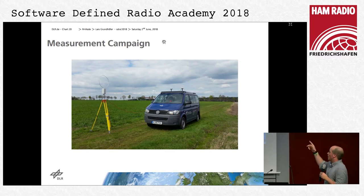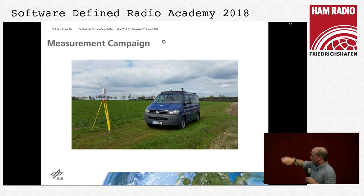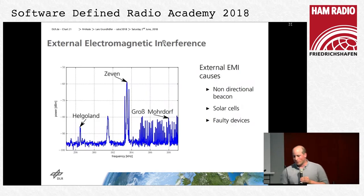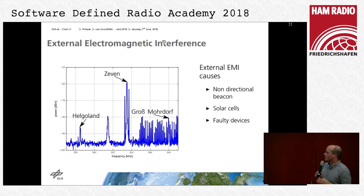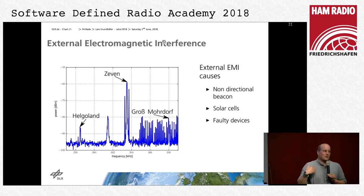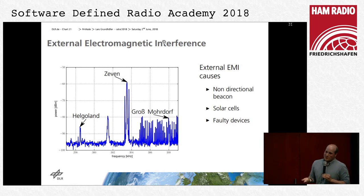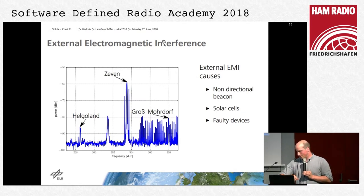Going outside, we have a quite nice loop antenna with two DORFI amplifier stages, and you can see some solar cells on the roof. When I plot the spectrum, I should see three YALA Beacon stations: Helgoland at 285 kHz, Zeven at 303.5 kHz, and Groß Mordorf at 308 kHz. However, Groß Mordorf is somewhere in the noise floor. This noise floor is partly from the solar cells visible in the picture. We get a lot of noise from non-directional beacons of airplanes, which are in exactly the same frequency range, from solar cells, and from other unidentified interfering devices.